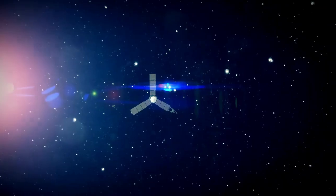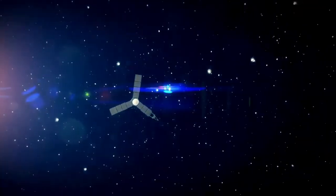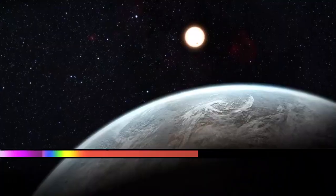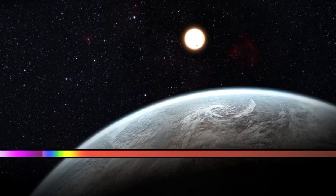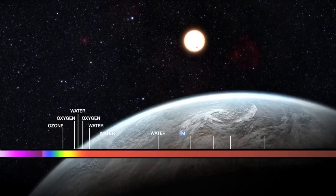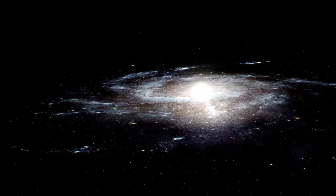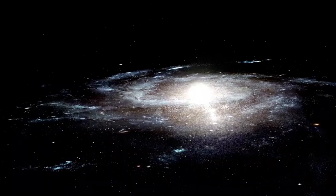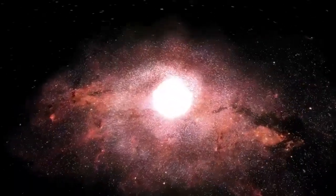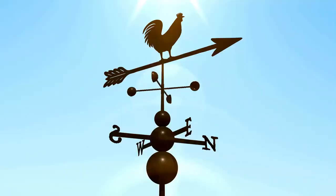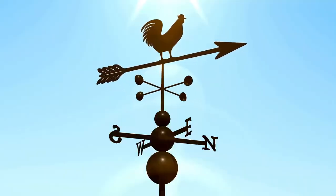To appreciate this vastness, consider traveling through space at the speed of light, which moves at about 299,792 kilometers per second or 186,282 miles per second. At this speed, light can cover the distance from Earth to the Sun, one astronomical unit, in just 8 minutes and 20 seconds.